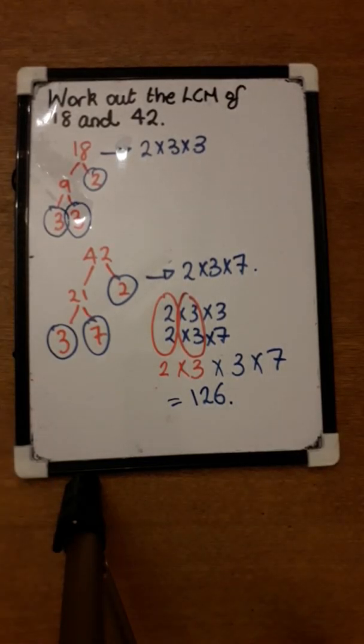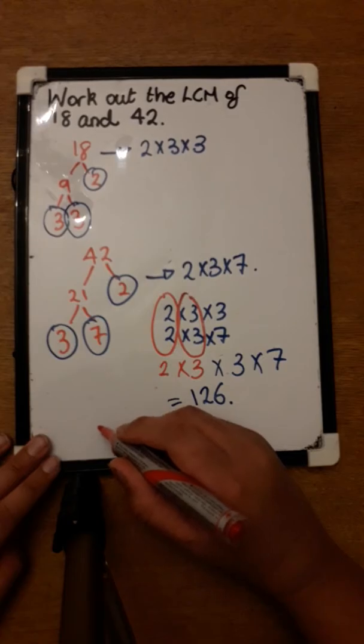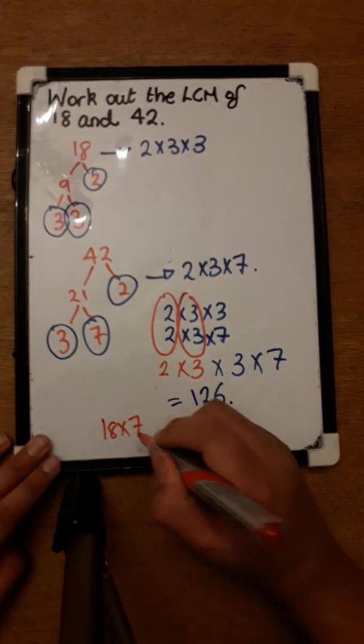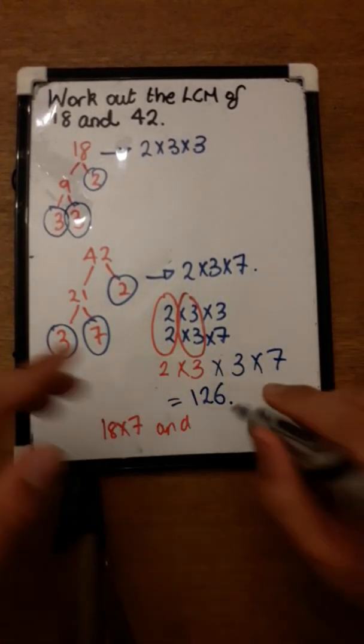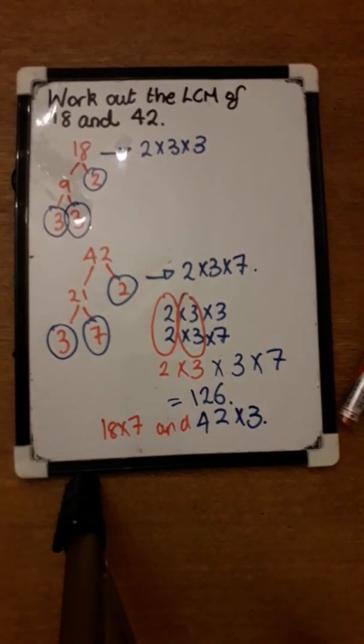From this, I can conclude that the LCM of 18 and 42 is 126. To get 126, it's 18 times 7 and 42 times 3. That was one example of how to work out the LCM.